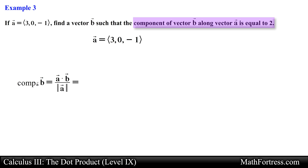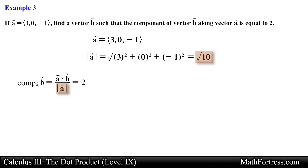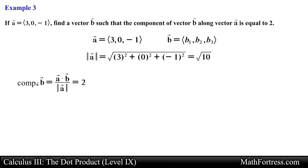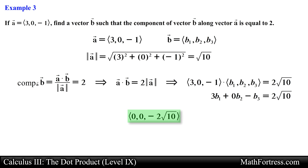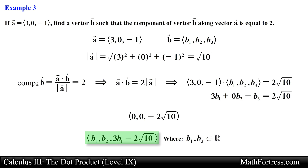We are given the value for the scalar projection, which is equal to 2, and we can also find the magnitude of vector a. Next, let's denote the components of vector b, so we can use this expression to find the dot product with vector a. We multiply both sides of this equation by the magnitude of vector a, then compute the dot product. With this information, one possible vector that meets the problem's requirements is the vector with components (0, 0, -2√10). In general, any vector with the following components would satisfy the conditions of the problem.